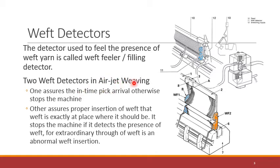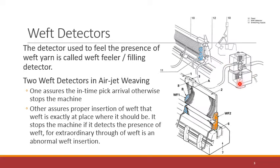For the special case of the air jet weaving machine, we have two types of weft detectors. The first detector is used to ensure that at the given time, a weft has arrived at the rightmost position. On this figure you can see the last weft sub-nozzle of the air jet insertion system. The blue one is the weft detector that will confirm the presence of the weft after weft insertion is completed. There is also a stretcher available that will keep the yarn stretched so that it can be detected by the weft detector.